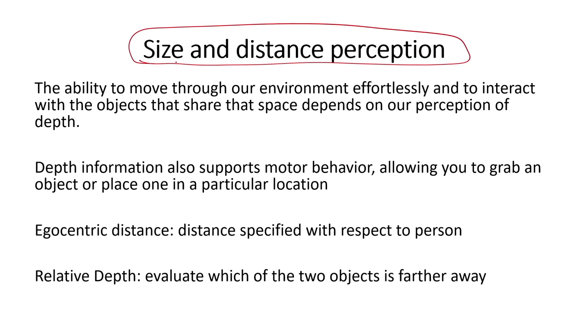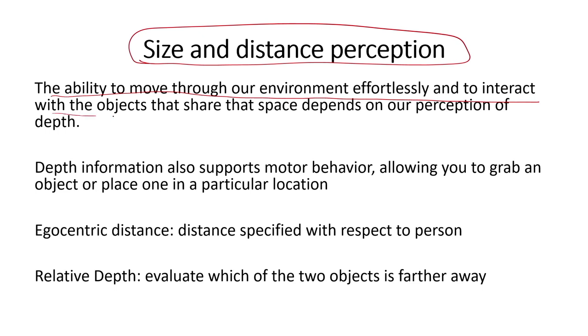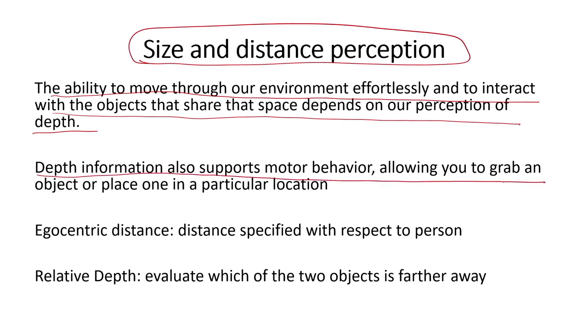We now come to size and distance perception — how the perception of distance is affected by size, and how humans perceive three dimensions with a two-dimensional eye. The ability to move through our environment and interact with objects depends on our perception of depth. Depth information also supports motor behavior, allowing you to grab an object and place it in a particular location. Grasping anything from the environment or interacting with things requires knowing exactly where in the environment that object is.